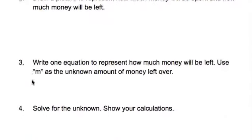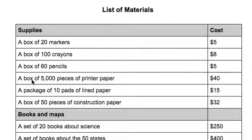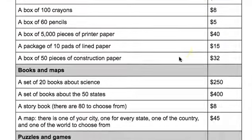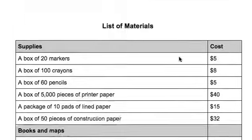Pick at least, and then scroll down to the next page, here are all the lists of materials. So a box of 20 markers costs five dollars and you can see all the different materials that are available.